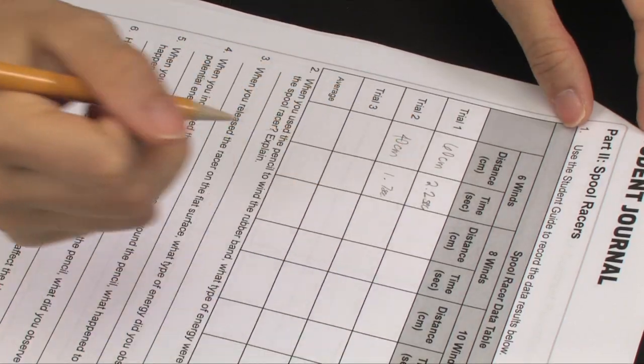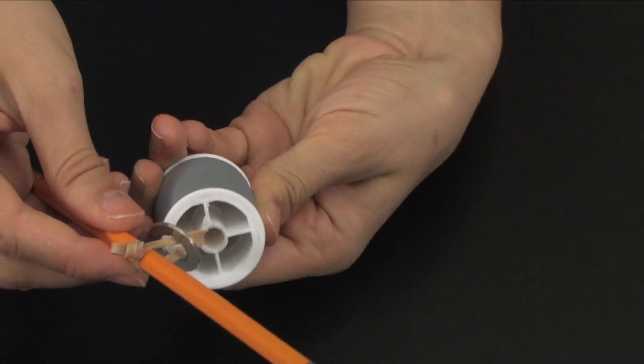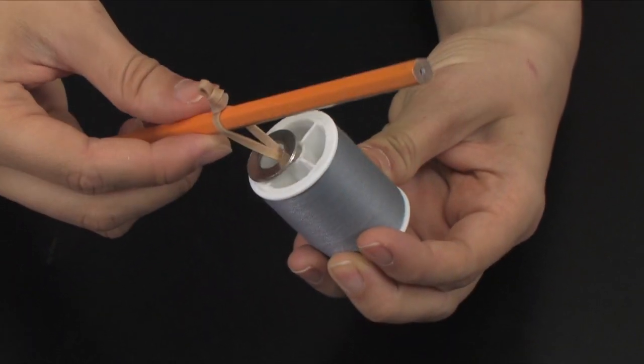Students will wind the racer six times, release the racer, and collect the data. They will repeat this for two more trials. Students should take care to untwist the rubber band before winding for each new trial.